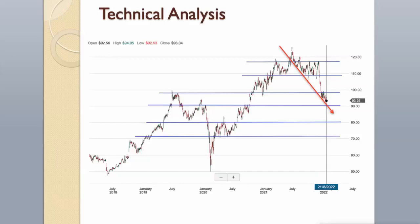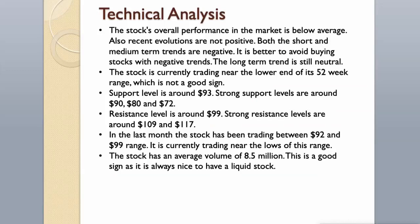Support level is around $93. Strong support levels are around $90, $80 and $72. Resistance level is around $99. Strong resistance levels are around $109 and $117. In the last month the stock has been trading between the $92 and $99 range, and is currently trading near the lows of this range. The stock has an average volume of 8.5 million, which is a good sign as it is always nice to have a liquid stock.